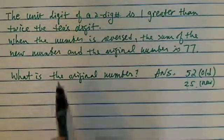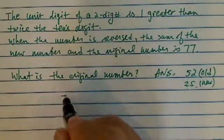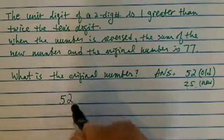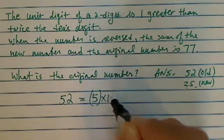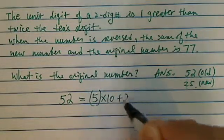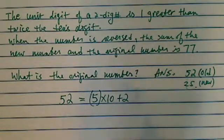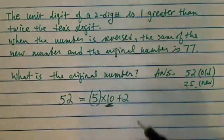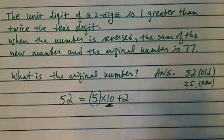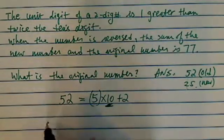The trick is this: when we write 52, we're really saying it's 5 times 10 plus 2. That times-10 part is where the trick of this whole problem is. So let's start.